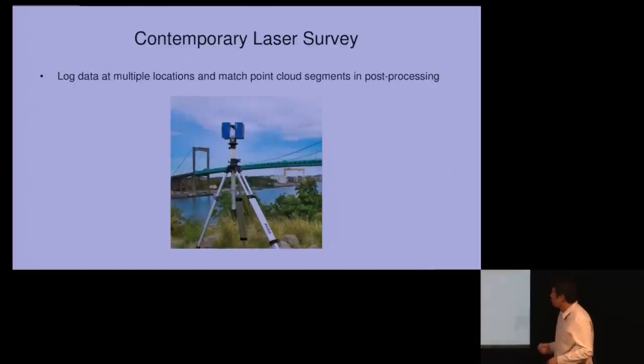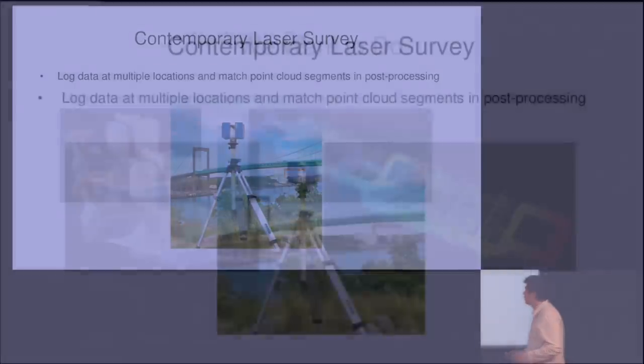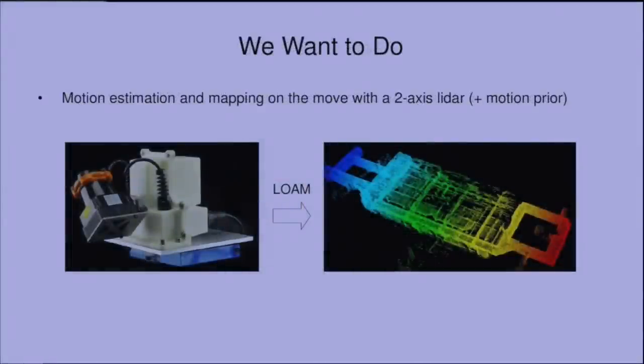What we want to do here is take a 3D laser scanner as an example in the left figure. We take the point cloud from the LiDAR and we want to do motion estimation on the move in real time. And with the estimated motion, we want to register the LiDAR point cloud to build a map of the traversed environment. We say that there is motion prior because there is a linear motion model in it.